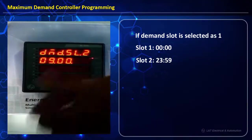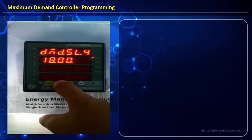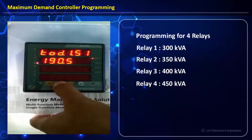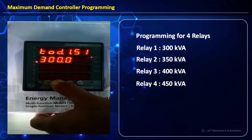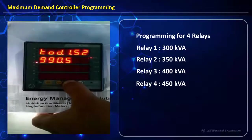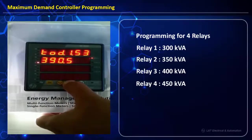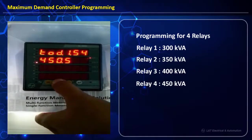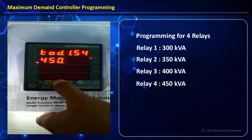This will cover the entire day's duration. Demand slots 3, 4, 5, and 6 can be kept as they are. For TOD1-S1, relay 1 is programmed for 300 kVA — we modify it to 300.0 with the k indicator on. Next, TOD1-S2 is set for 350 kVA, TOD1-S3 for 400 kVA, and relay 4 for 450 kVA. The moment running demand crosses a threshold value, the corresponding relay gets activated.